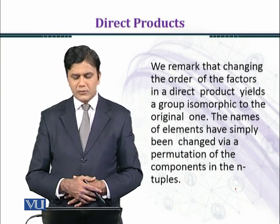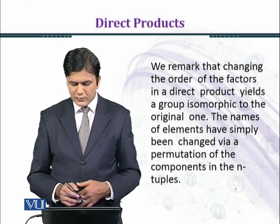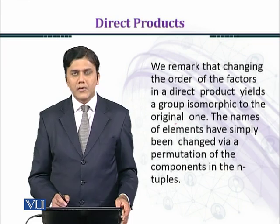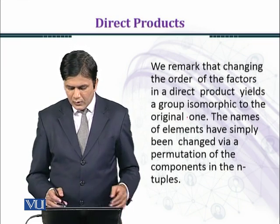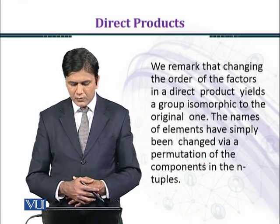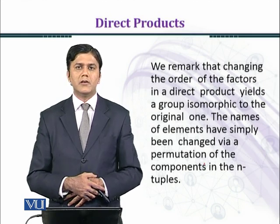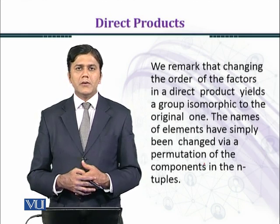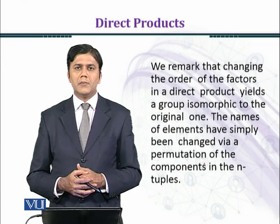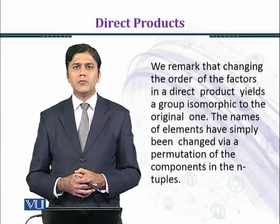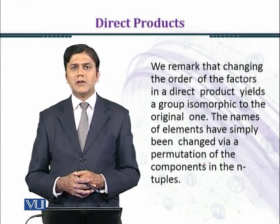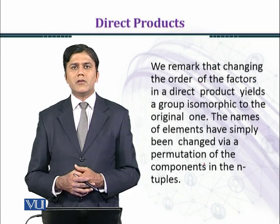We remark that changing the order of the factors in a direct product yields a group isomorphic to the original one. The names of elements have simply been changed via a permutation of the components in the n-tuples. For example, Z_72 is isomorphic to Z_8 × Z_9, and similarly we can write Z_9 × Z_8.